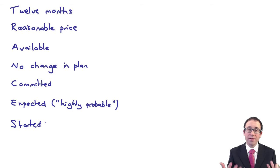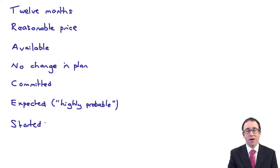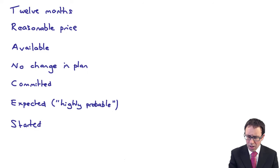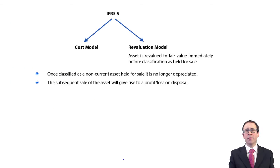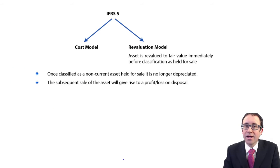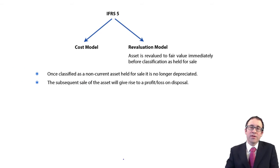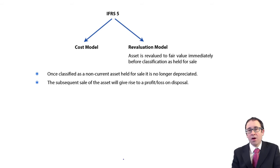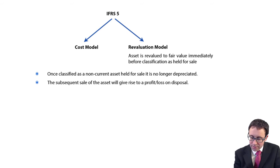Commit that mnemonic to memory and you won't go too far wrong. That will determine whether or not it is an IFRS 5 non-current asset held for sale. We then need to look at the accounting.